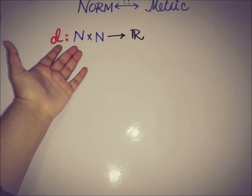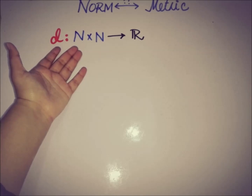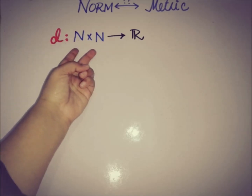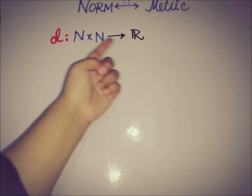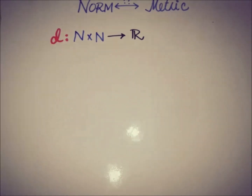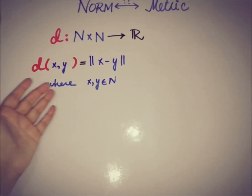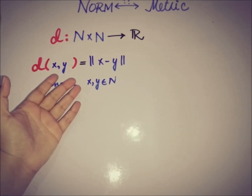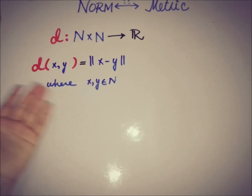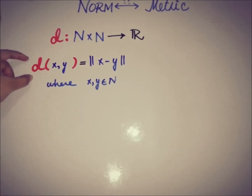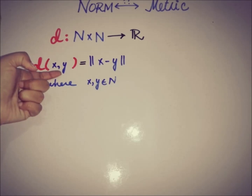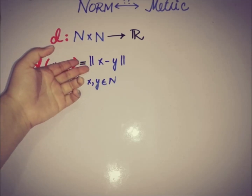We define a function d from N×N to ℝ, where N denotes the normed space as used in the previous video. This function takes a pair from the normed space and maps it to a real number. The function d is defined as d(x, y) = ||x - y||, where x and y are elements of the normed space.